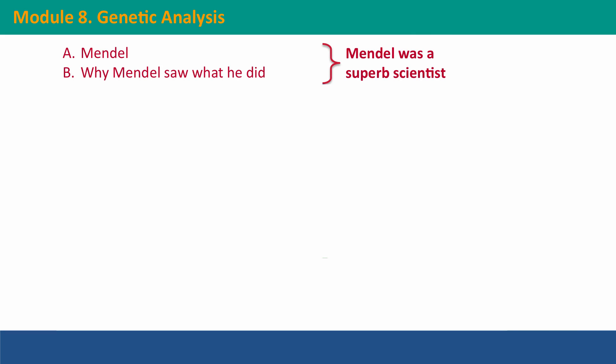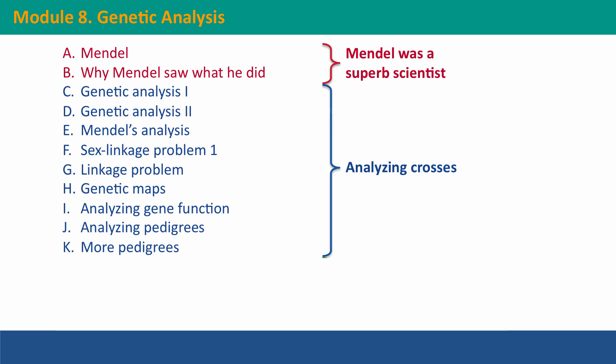We'll begin with a couple of lectures about Gregor Mendel, emphasizing the practices that made him such a superb scientist and allowed him to discover how inheritance worked 50 years before anybody else figured it out. And then we have a long series of lectures with genetics problems where we'll learn to think our way through crosses and make inferences about how inheritance works in particular cases and about what genes do.